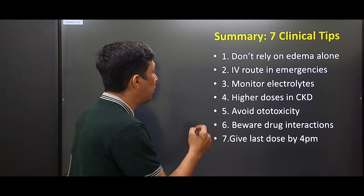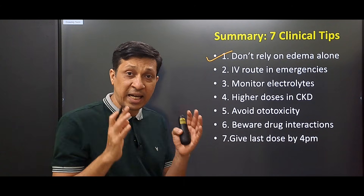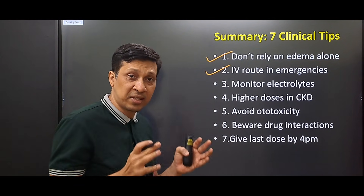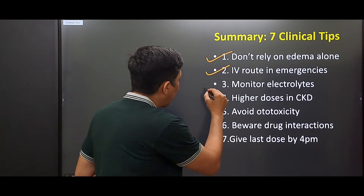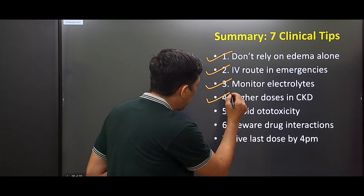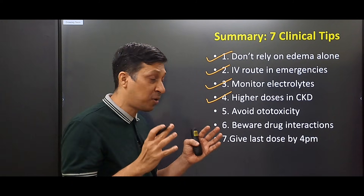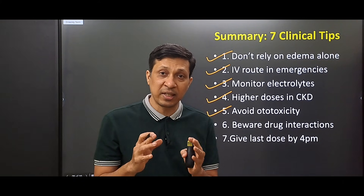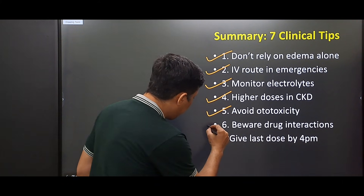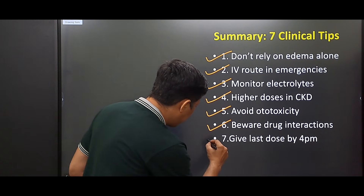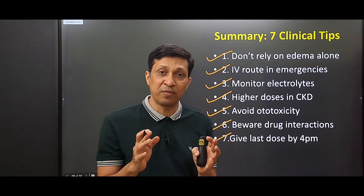In summary: don't rely on edema alone — check for signs of increased volume. Always use the IV route in emergencies for quick action. Monitor electrolytes, especially potassium. Higher doses may be required in CKD patients. Avoid ototoxicity by avoiding large doses and rapid IV push. Be aware of key drug interactions, especially with digoxin. And always give the last dose of furosemide around 4 PM.